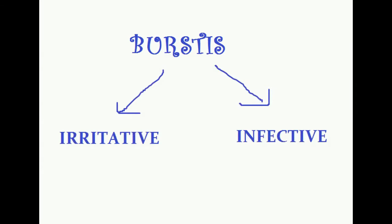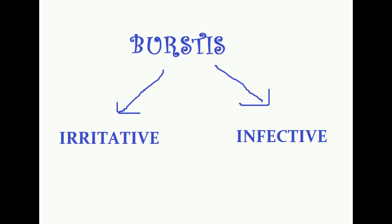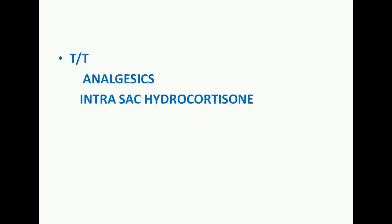In bursitis we have irritative bursitis and infective bursitis. In irritative bursitis, the causes are friction, pressure, and most commonly gouty deposits. The chronic sequelae of irritative bursitis is erosion of the adjacent bone. Treatment is analgesics and intrasac hydrocortisone.